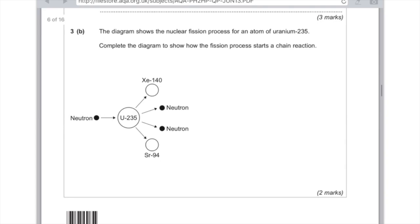So, 3b. The diagram shows the nuclear fission process for an atom of uranium-235. Complete the diagram to show how fission process starts a chain reaction. So we want the neutrons that were released to go on and hit more uranium nuclei. So we're just going to call that uranium-235. This neutron is going to hit another uranium. And then more neutrons will be released. And they'll go off and hit more uranium. I'm just going to label these neutrons. But yeah, that's fundamentally, in essence, what you need.